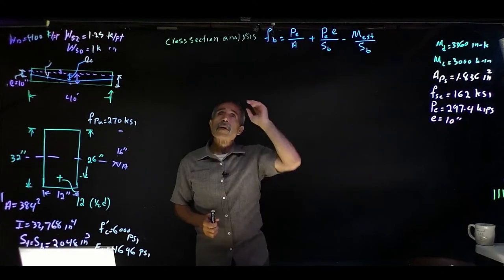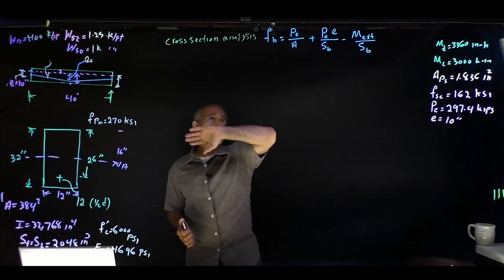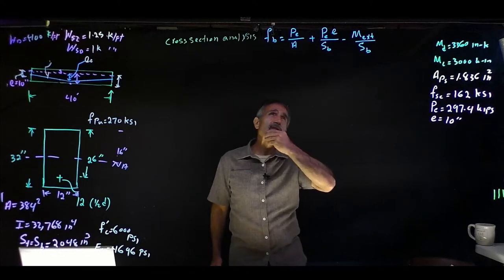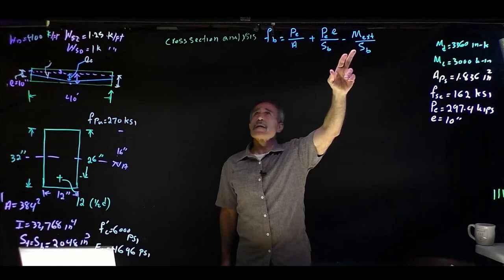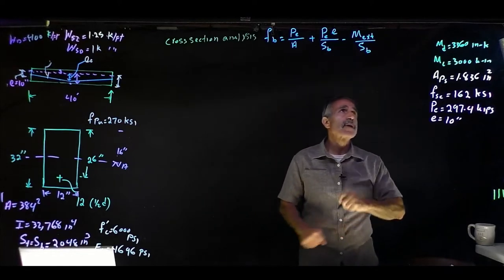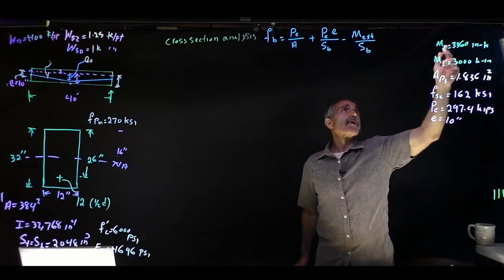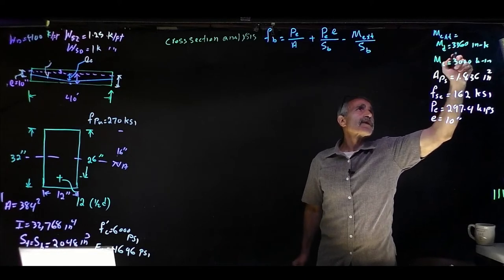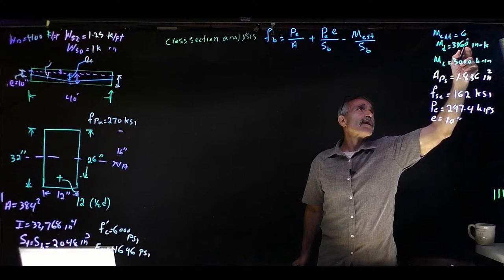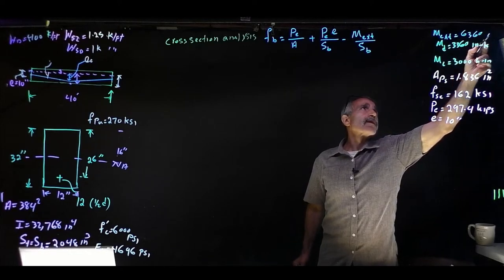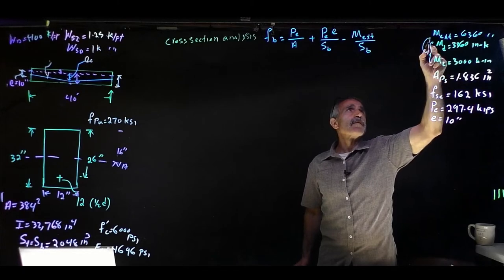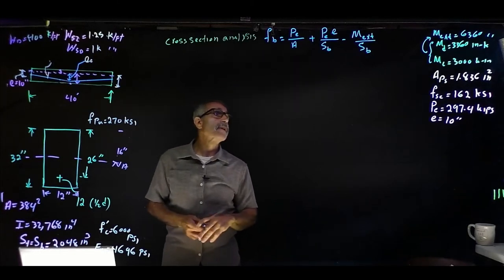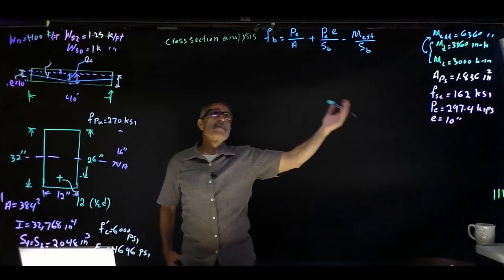Now we'll do the cross-sectional analysis using the stress equation — you've seen this equation many times in previous sessions. We calculate the total exterior moment, which is dead load plus live load combined: MD + ML = 3,360 + 3,000 = 6,360 inch-kips. We now calculate fb at the bottom fiber in psi, converting kips to pounds.